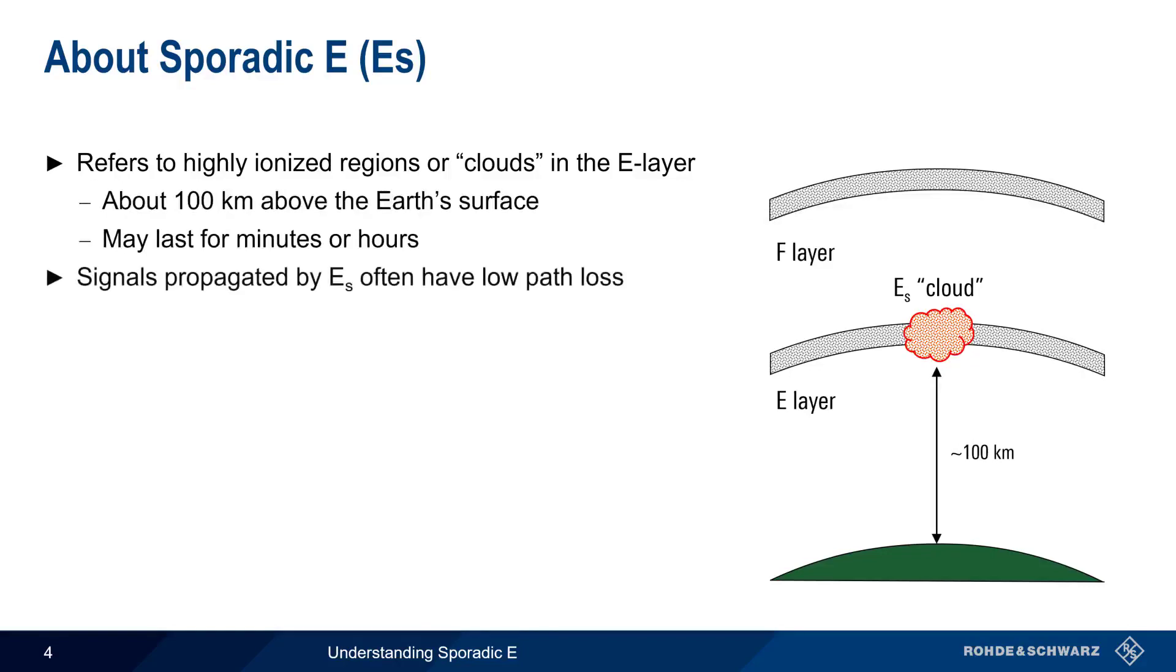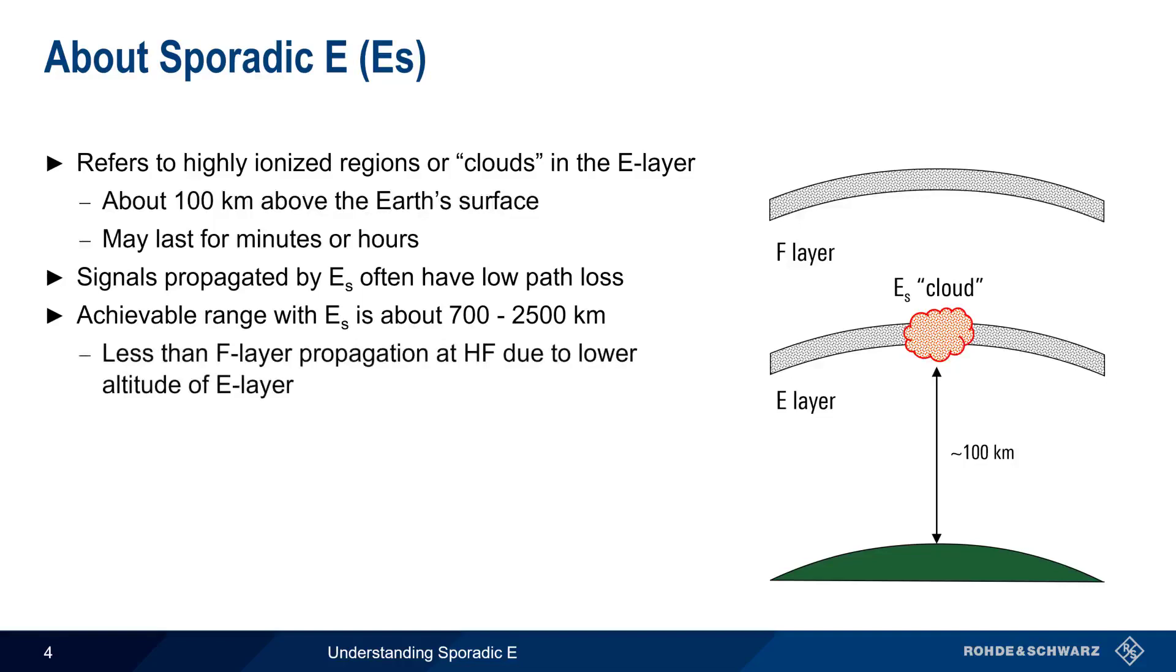The signals propagated by sporadic E often have very low path loss, and therefore lead to high received signal strengths at the receiver. Sporadic E can also propagate signals for long distances, typically in the range of 700 to 2500 kilometers. Because of the lower altitude of the E layer, these distances are somewhat lower than the distances achievable with F layer propagation of HF signals.